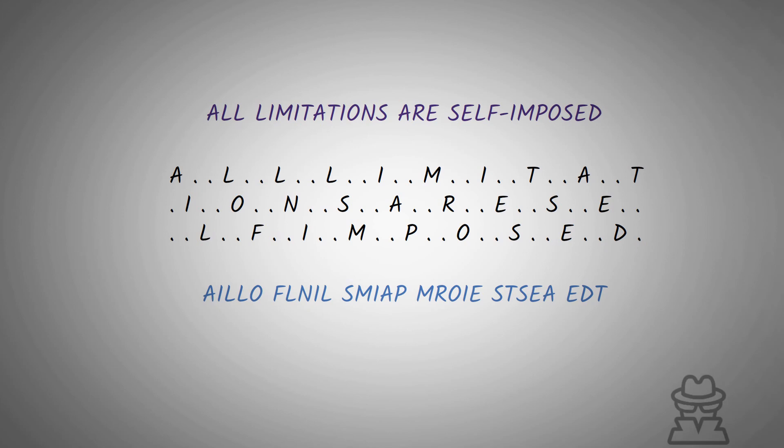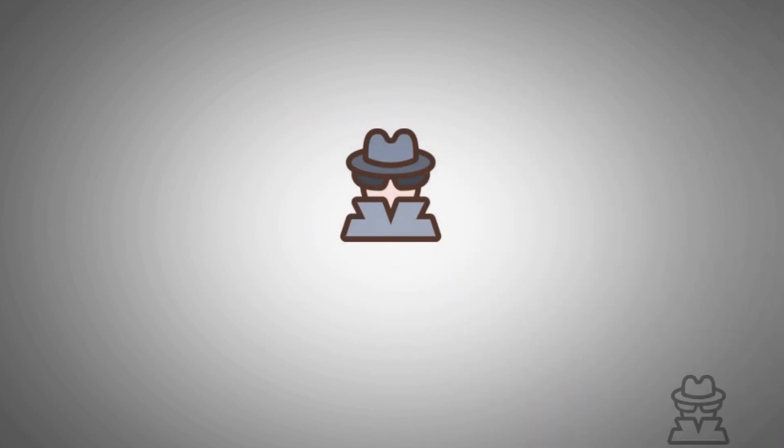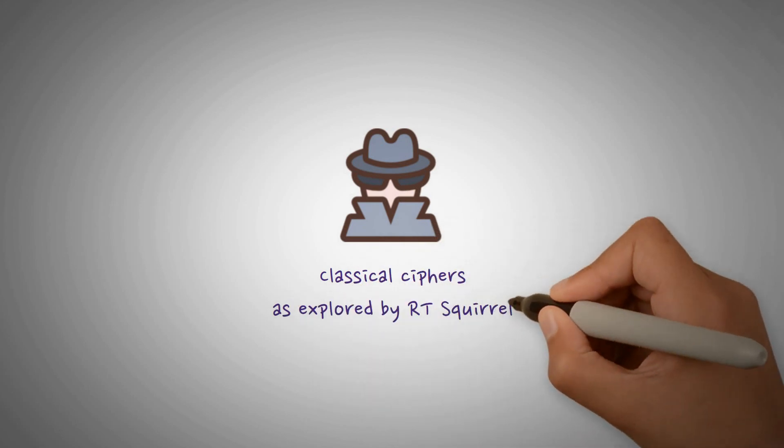Thank you for joining me on this initial dive into transposition ciphers. In our next video, we will take a look at the rail fence cipher, another transposition cipher employing a similar pattern concept as the Scytale. If you liked what you learned here and are interested in more, don't forget to like and follow below. Until next time, everyone!